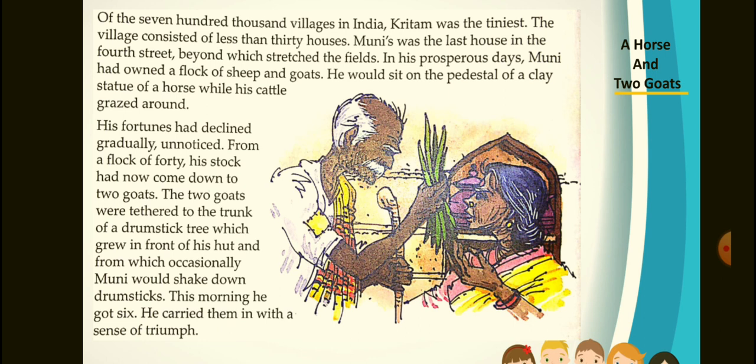Of the 700,000 villages in India, Kritham was the tiniest, consisting of less than 30 houses. Muni's house was the last house in the fourth street, beyond which stretched the fields. In his prosperous days, Muni had owned a flock of sheep and goats. He would sit on the pedestal of a clay statue of a horse while his cattle grazed around. His fortunes had declined gradually, unnoticed. From a flock of forty, his stock had now come down to two goats, tethered to the trunk of a drumstick tree in front of his hut.